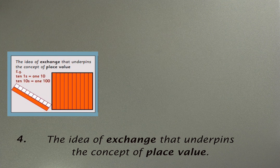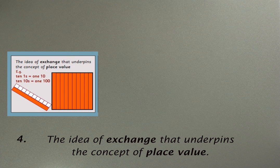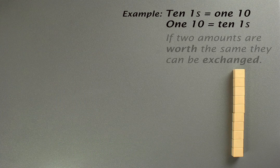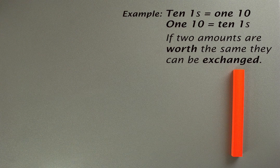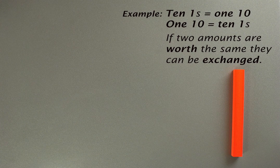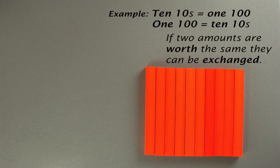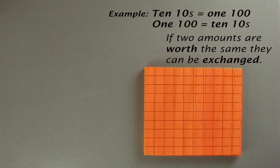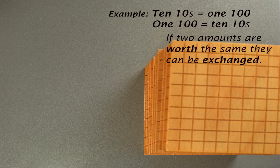The next pre-skill I want to look at is the idea of exchange that underpins the whole concept of place value. This means that we need children to understand that ten ones is the same as one ten, or that one ten is the same as ten ones, and that if two amounts are worth the same, they can be exchanged. And the same goes for ten tens being equal to one hundred, or vice versa, or ten hundreds being equal to one thousand.